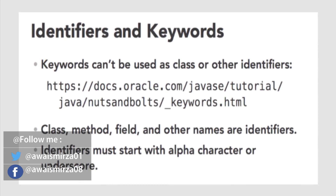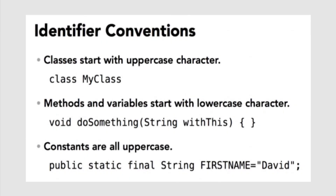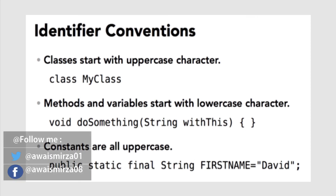Class names always start with an uppercase character — my class starts with an uppercase M but can use other uppercase characters as needed to make code readable. Methods, variables, and other members of the class always start with a lowercase character, so a method called doSomething starts with a lowercase 'd' and receives a parameter that starts with a lowercase letter. If you were to use uppercase characters for those identifiers, your code would still work. Constants are always all uppercase letters. There is no constant keyword in Java — instead, a constant is static and final. Static means it's a member of a class, and final means once it's been set it cannot be changed. For example, a string constant named FIRST_NAME with a value of David.